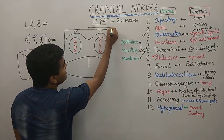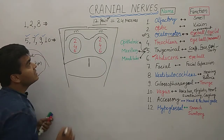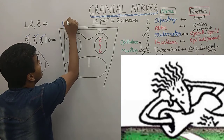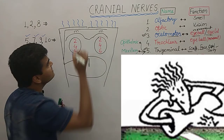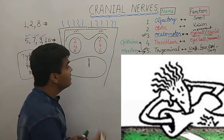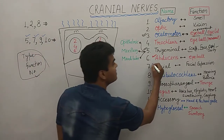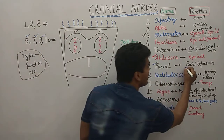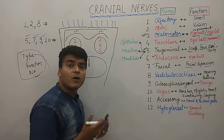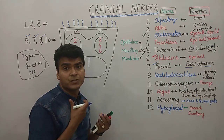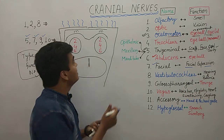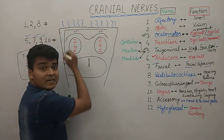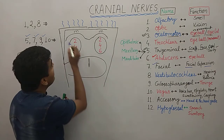Next we draw the number 7. It resembles the Seven Up cartoon character with hair. The seventh cranial nerve is the facial nerve. Its function is facial expression — it supplies all over the facial region, enabling movement of every part of the face for expression.